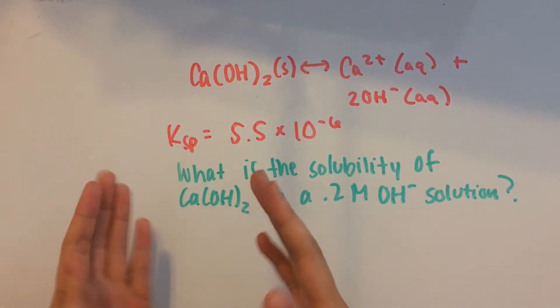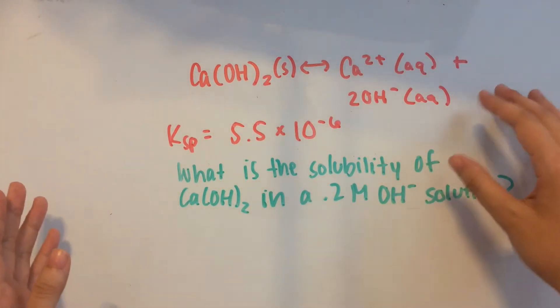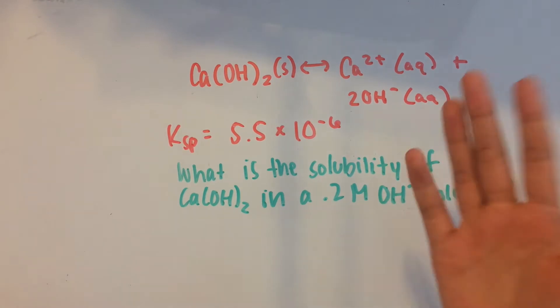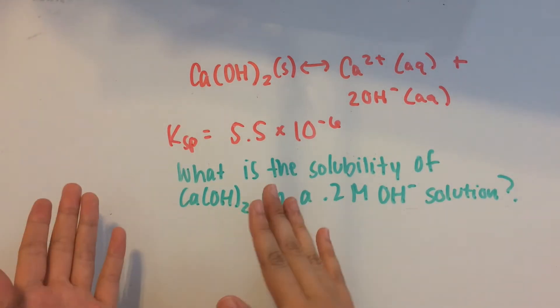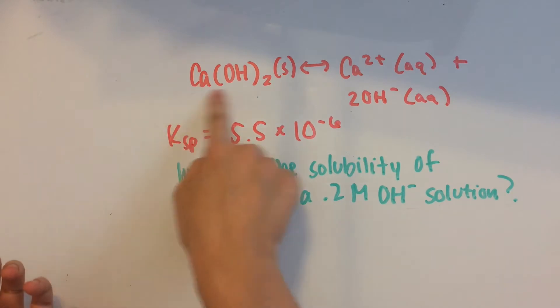The common ion effect is when you have a solid and then put it into a solution that already has dissolved ions in it. This lowers the solubility of that solid.